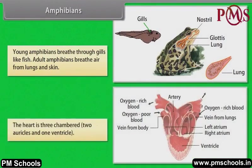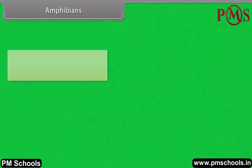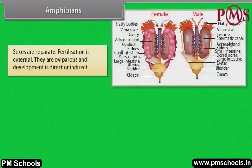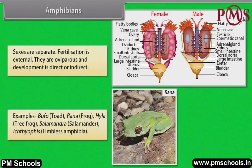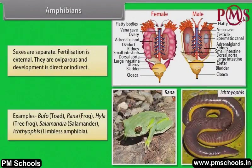Young amphibians breathe through gills like fish. Adult amphibians breathe air from lungs and skin. The heart is three-chambered: two auricles and one ventricle. Sexes are separate. Fertilization is external. They are oviparous and development is direct or indirect. Examples: Bufo (toad), Rana (frog), Hyla (tree frog), Salamandra (salamander), Ichthyophis (limbless amphibia).